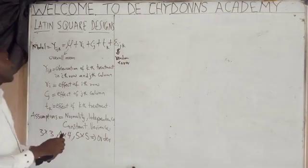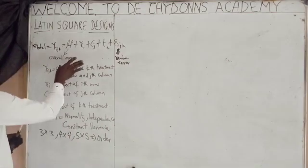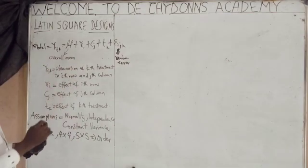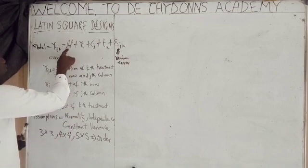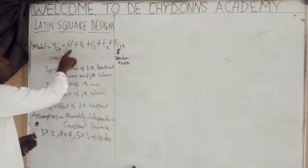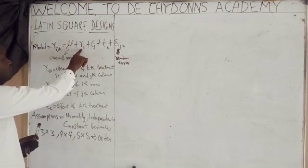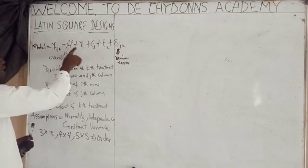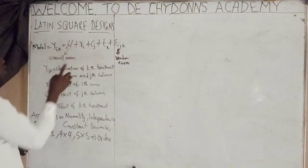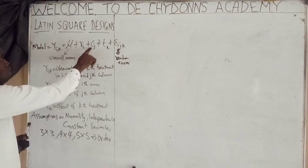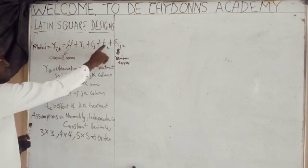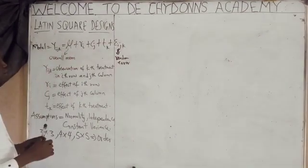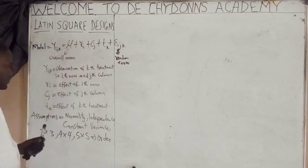From the model, a Latin Square design is made up of: overall mean, effect of the ith row, effect of the jth column, treatment effect, and random error. Those are the five components of the model.